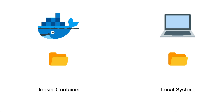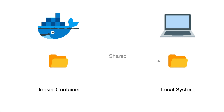In multiple situations — like when an application is storing data or using data from an external file system — we need the Docker container file system to be mapped or shared with the local file system. This is what Docker volume does. Docker volume is a mechanism to map the Docker container file system with the local system file system, so data generated inside the container is available on the host file system.